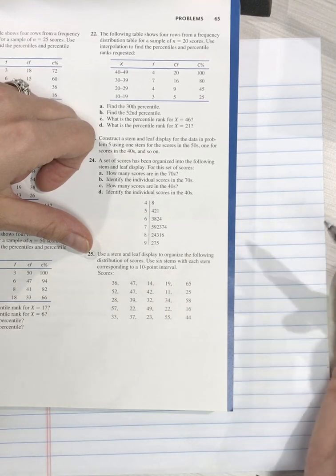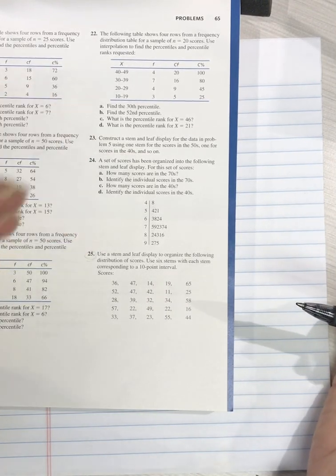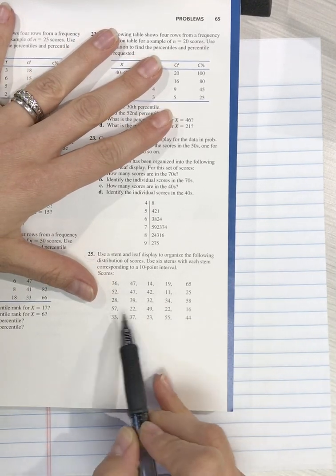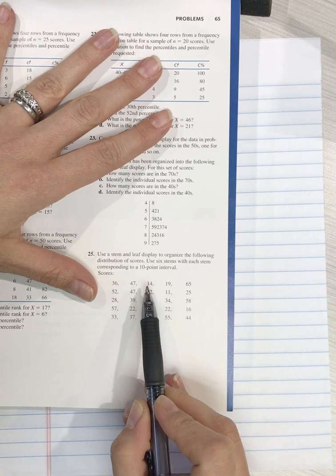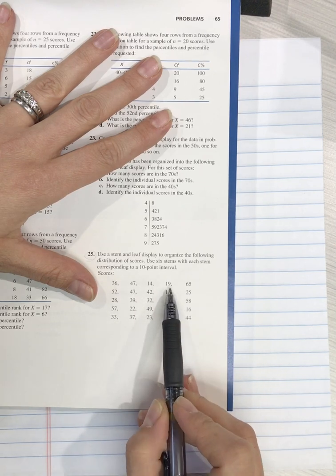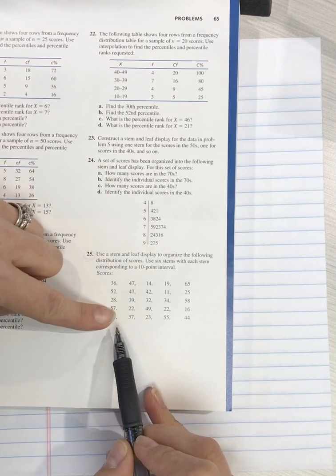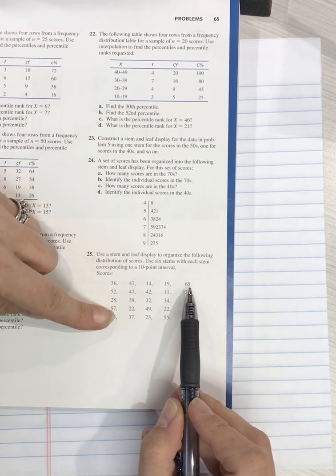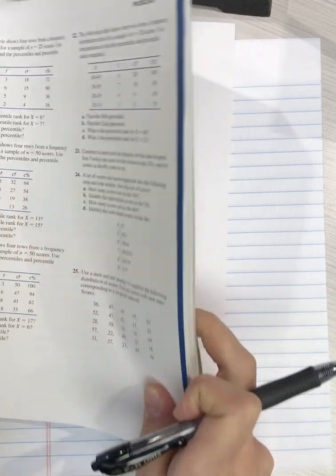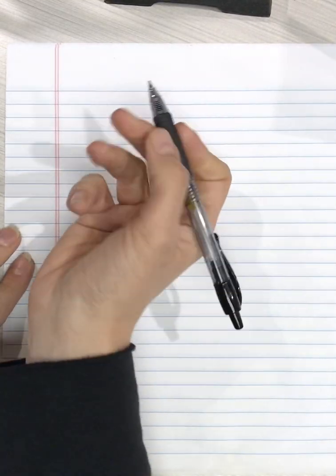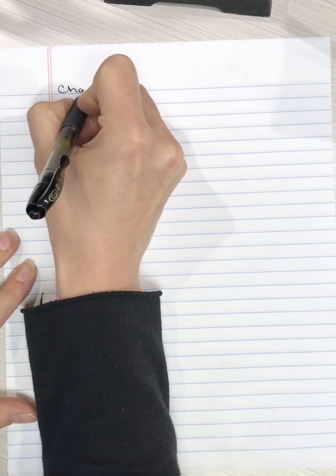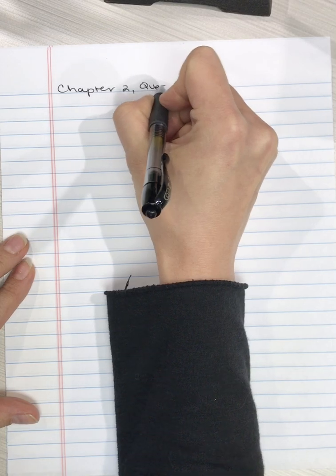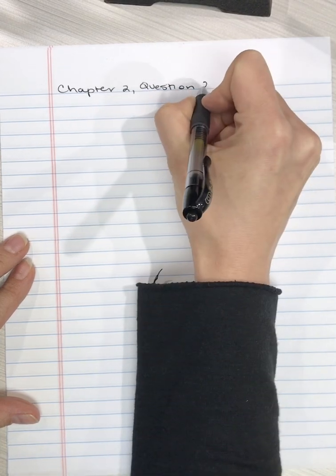The first step that we need to do is identify what is the smallest stem that we're going to use. What I can see here is that the lowest number in the distribution is 11, the highest is 65. So from that, this is chapter 2, question 25.